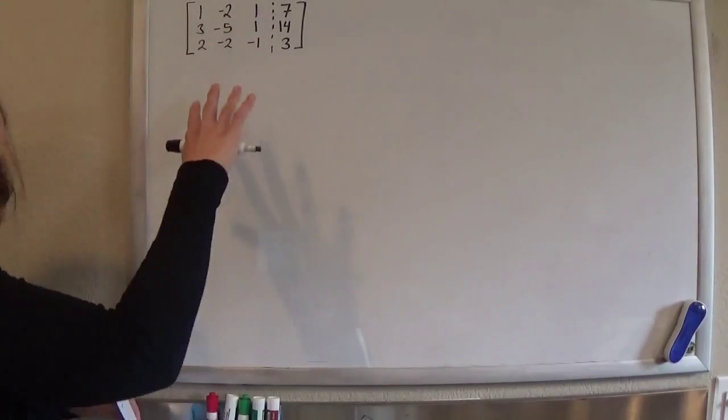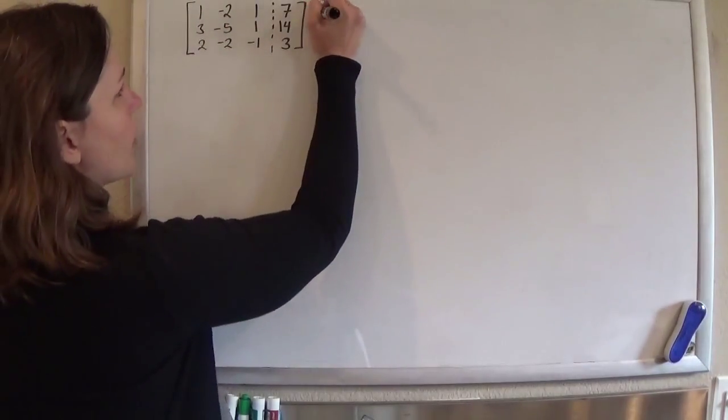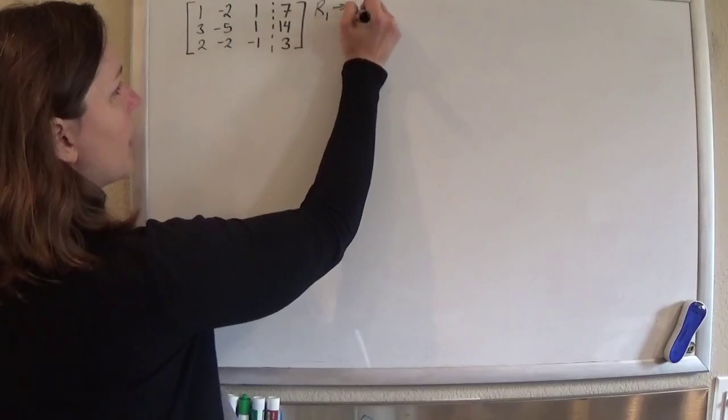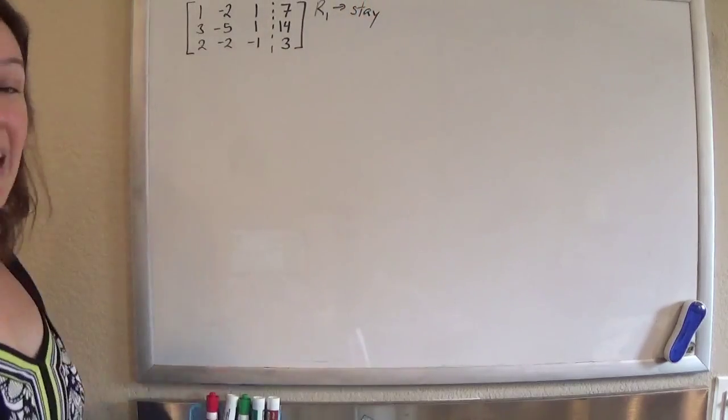Here we go. So I've already written it in the matrix form. First things first, row 1 is going to stay.